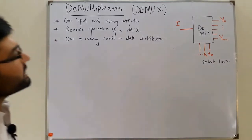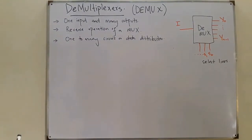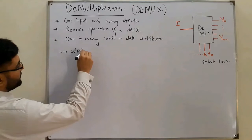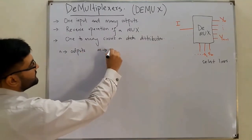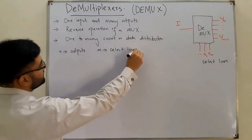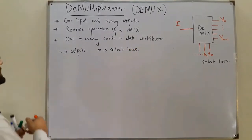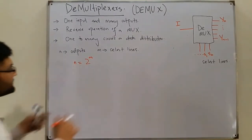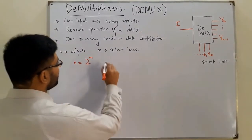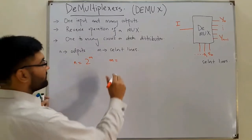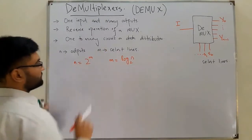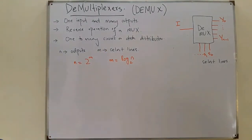How many select lines do we have? If n represents the number of outputs and m represents the number of select lines, the formula is: n = 2^m. To find m, we use: m = log base 2 of n.